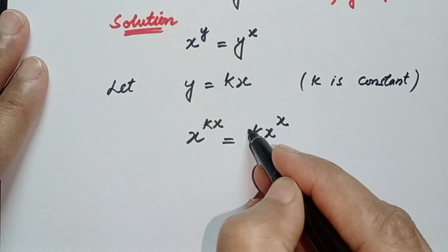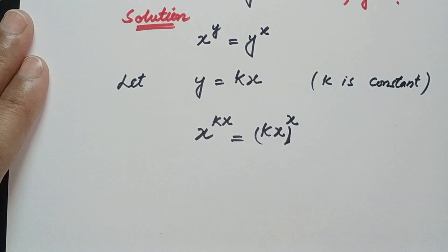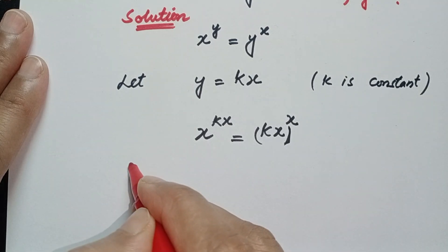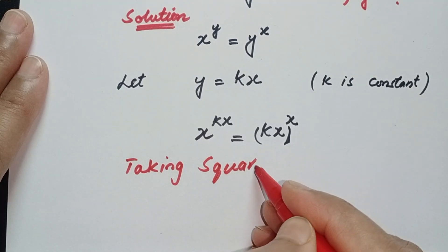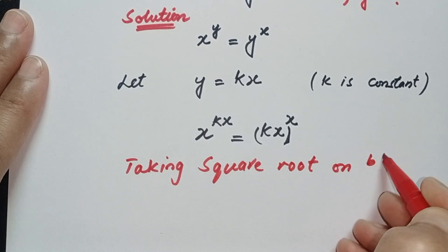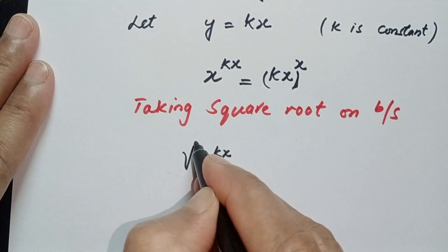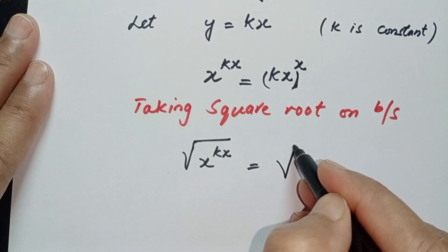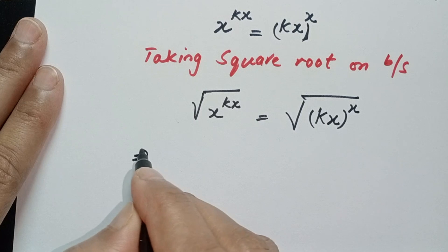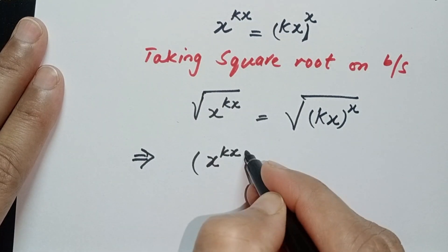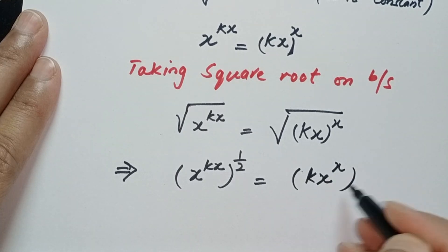We will write it in brackets. By taking square root on both sides, we get: square root of x to the power kx is equal to square root of kx to the power x. We can write square root as a power of 1 over 2, so: x to the power kx times 1 over 2 equals kx to the power x times 1 over 2.